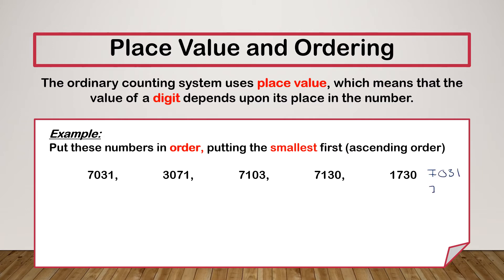So I've got 7,031. That second number I had, 3,071. Then I had 7,103, 7,130, and 1,730. Some people find it easier to list them on top of each other. When we're putting things in order, we should look at things by their place value — look at the thousands first, then our hundreds, then our tens, then our units.